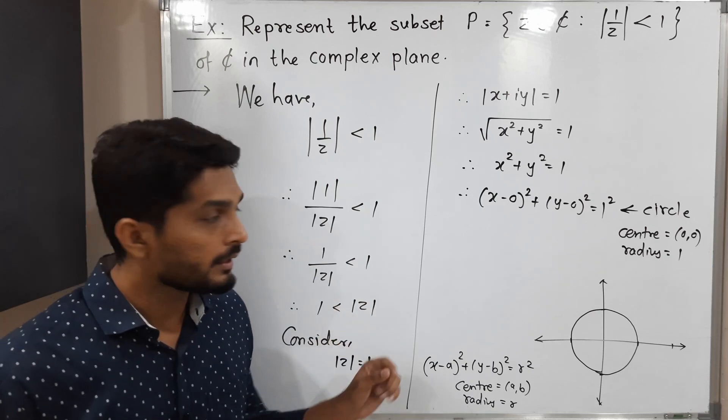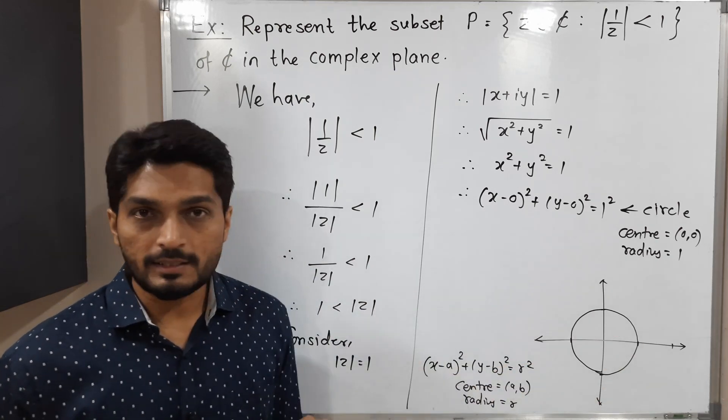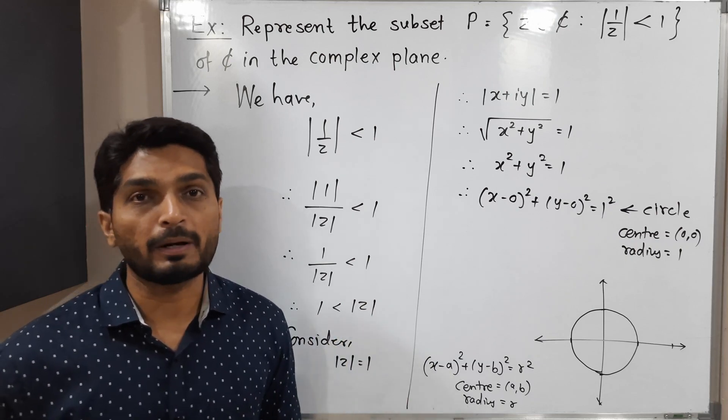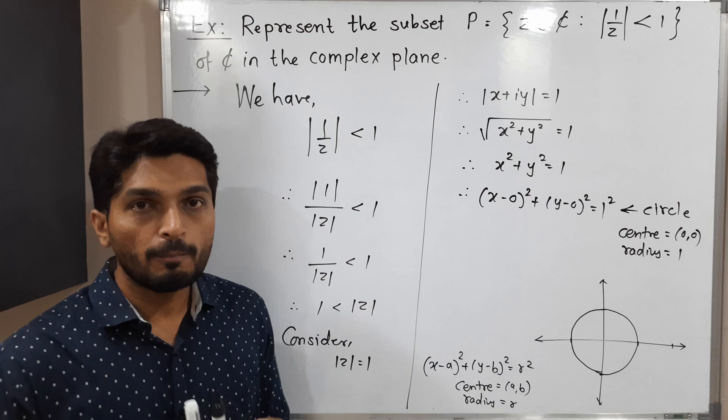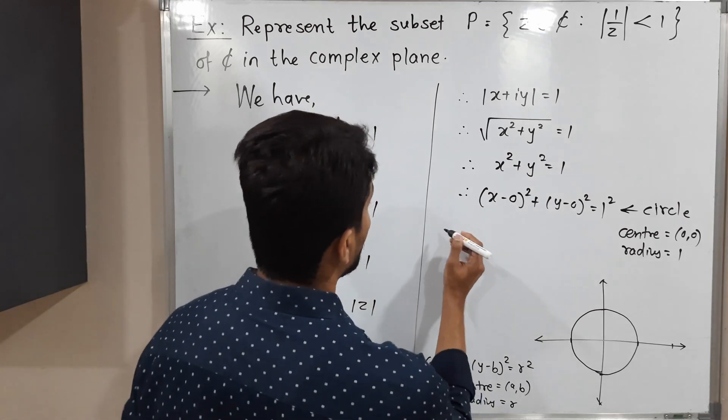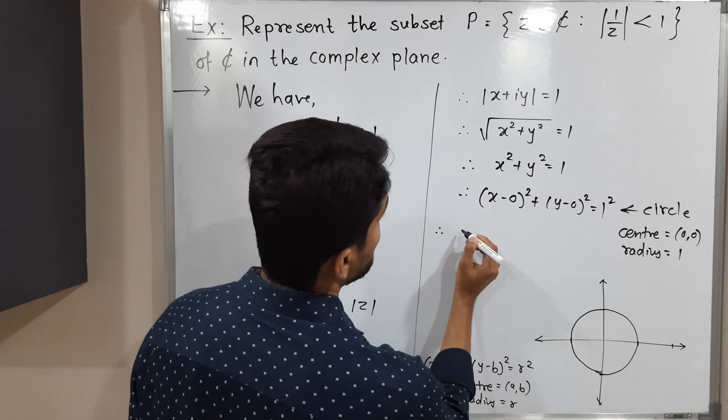When we say |z| = 1, that means the boundary of the circle. When we say |z| < 1, that means the interior part. Here we have |z| > 1, which means the exterior part of the circle.